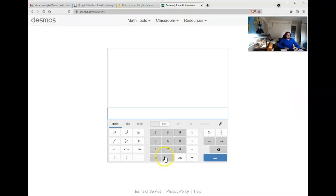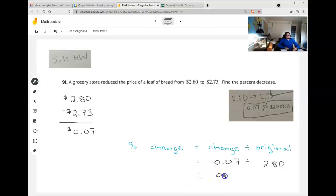So we need to divide by the 2.80. So what is that? 0.07 divided by 2.8 gives us 0.025. That's a good answer, but it's not a percent format answer.